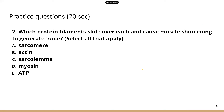Which protein filaments slide over each other and cause muscle shortening to generate force? Select all that apply. You have two protein filaments: actin, which is the thin filament, and myosin, which is the thick filament. ATP provides energy for muscle contraction — it's the energy source. Without ATP, the muscle cannot contract. So the correct answers are actin and myosin.